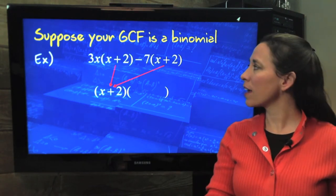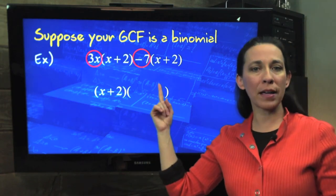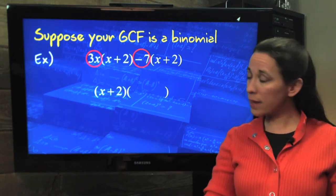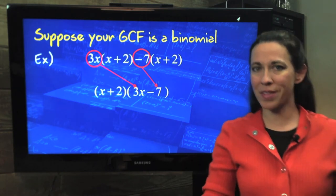Well, if we take out the x + 2, then we are left with the 3x and the minus 7, and that's what creates our second binomial. We're going to use this in the grouping method here in a second.